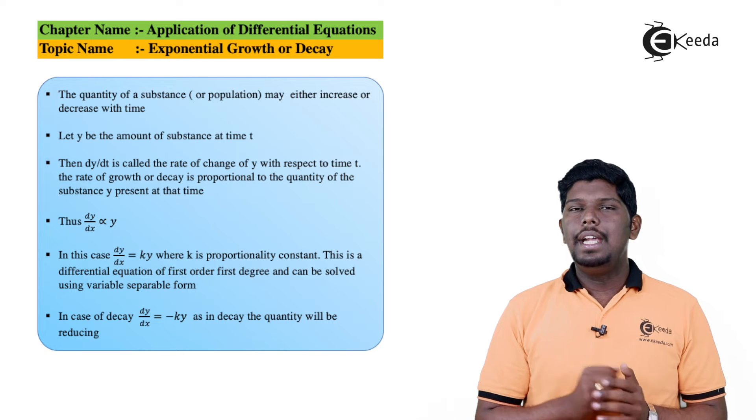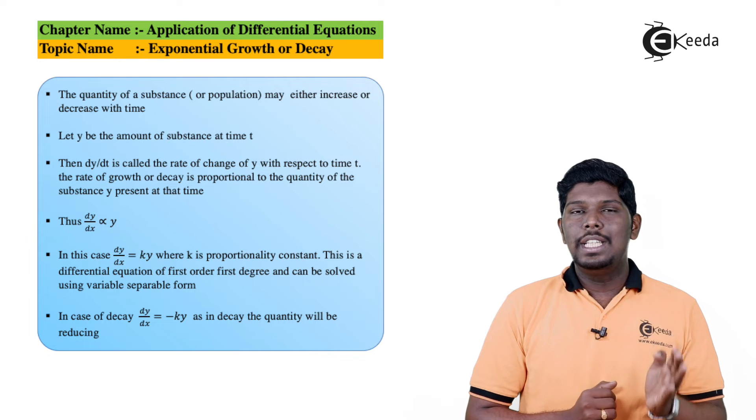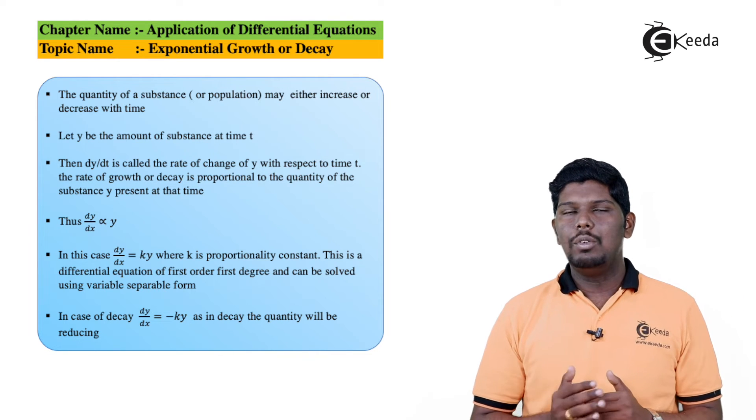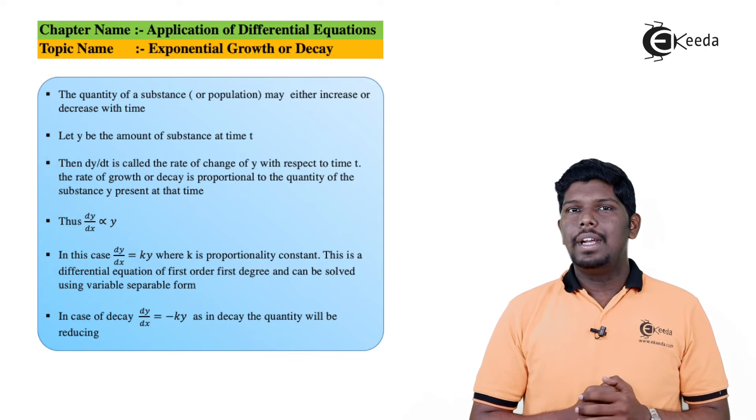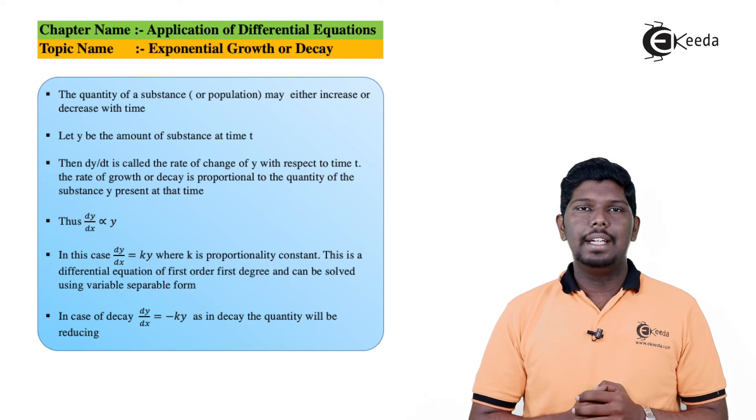Then dy by dt will represent rate of change of y with respect to time t. Now this rate of change can be either positive or increasing, or negative, that is decreasing. But remember friends, this rate will be directly proportional to the original substance present at that time.